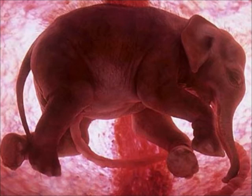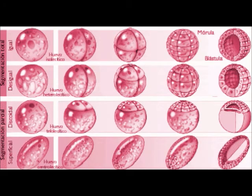The quantity of vitellus is very important because cellular division will not be the same with more or less vitellus. Total segmentation of isolecithal and mesolecithal eggs is holoblastic. Partial segmentation is typical of telolecithal and centrolecithal eggs and is called meroblastic.